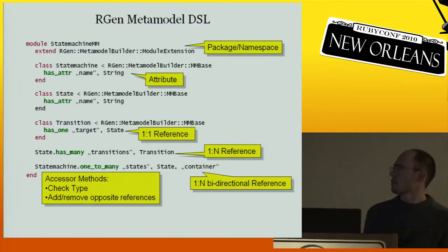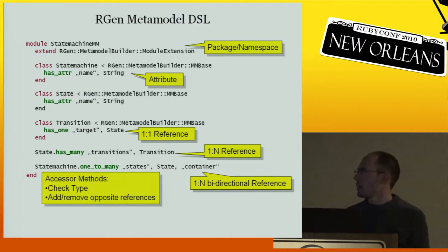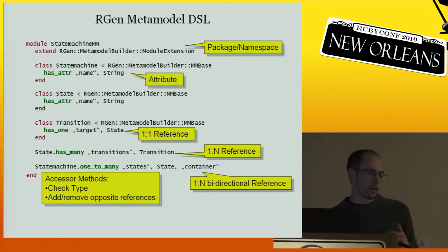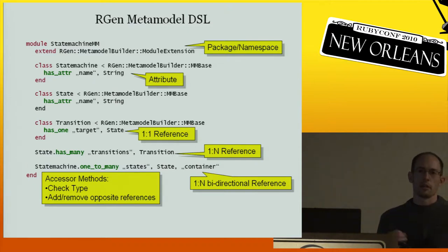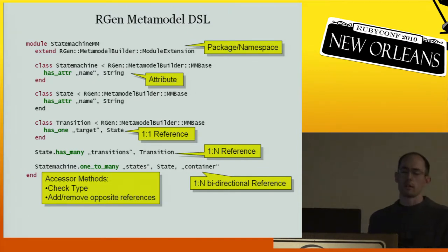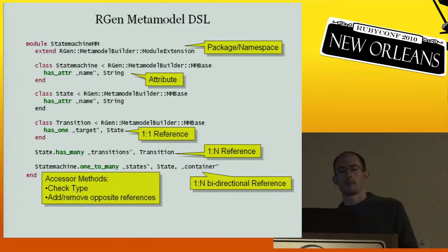Regarding DSLs generally, a DSL consists of an abstract syntax and a concrete syntax. You can think of it like the grammar of a parsed language and the syntactic sugar between the elements which form the syntax tree. One is what's the content and the other is how the content looks. What we have here is basically the abstract syntax of a little language — a language which talks about state machines. We can have a state machine, it can have states, they can be linked, and so on.